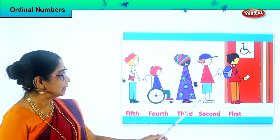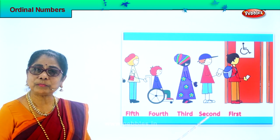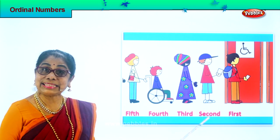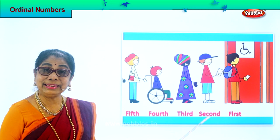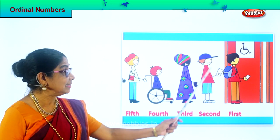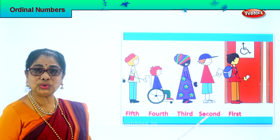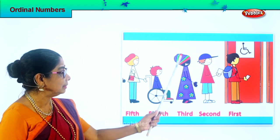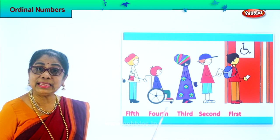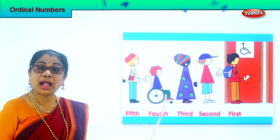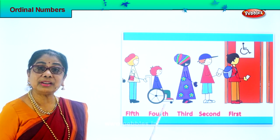First person, second. Spell second: S-E-C-O-N-D. Second. So this is the second person. Let's look at the third. Spell third: T-H-I-R-D. Third.